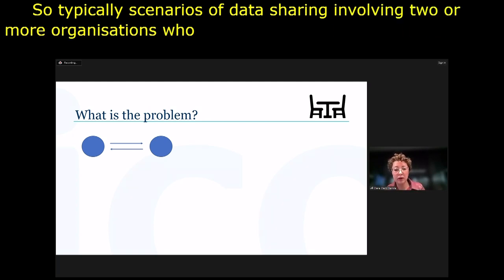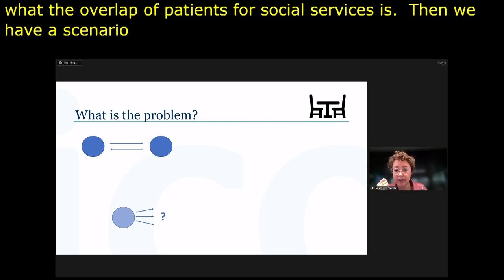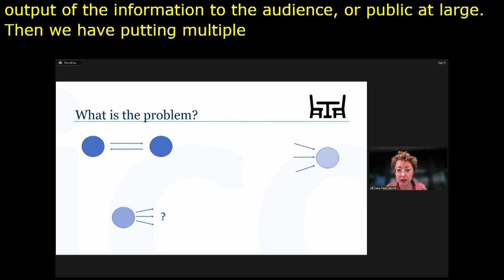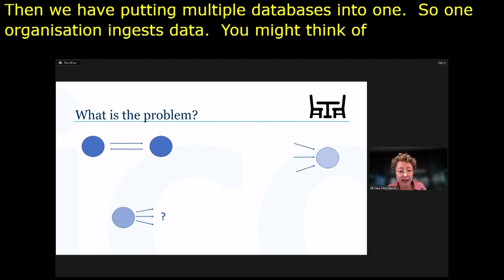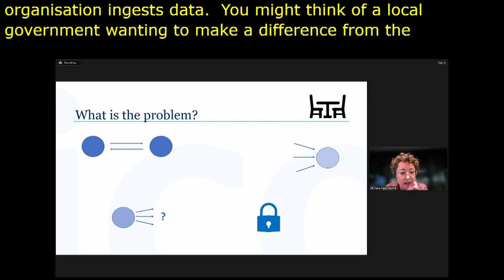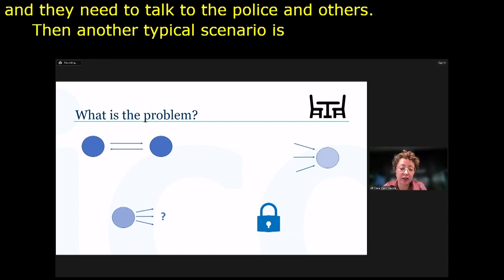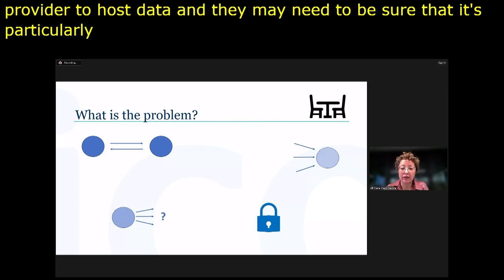Another common scenario is publication of data — outputting data to an audience or the public at large. Then there's putting multiple databases into one, where one organisation ingests data from multiple sources: a local government wanting road layout improvements might take in data from police, hospitals, citizen feedback, and cycling campaign data. Finally, there's the need to keep data secure, for example when a government uses an external provider to host data and needs to ensure it's particularly secure.